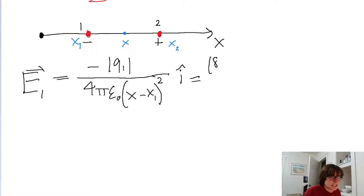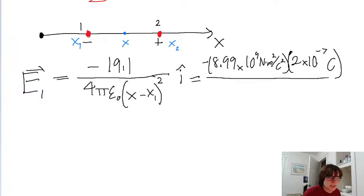So remember that the Coulomb constant has a magnitude of 8.99 times 10 to the power of 9, with units of newton meters squared per coulomb squared. The whole thing is negative, and we're multiplying by a charge magnitude of 2 times 10 to the power of negative 7 coulombs. This is being divided by the distance between x minus x1 squared. So the position of x is 13.5 centimeters, which can be represented in meters as 0.135 meters.